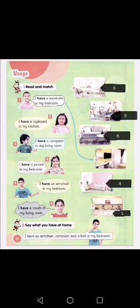Number one: read and match. Number one — I have a wardrobe in my bedroom, so number one matches with D. Number two — I have a cupboard in my kitchen. Where is the kitchen? Number two matches with F. Number three — I have a computer in my living room, so number three matches with B. Number four — I have a picture in my bedroom. Where is the picture in the bedroom? Number four matches with E.